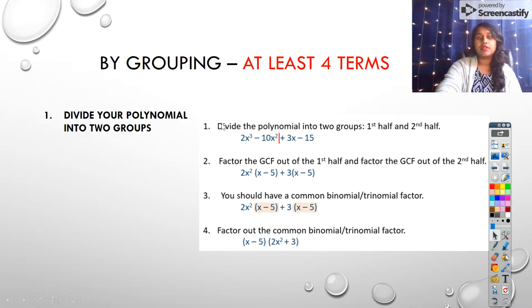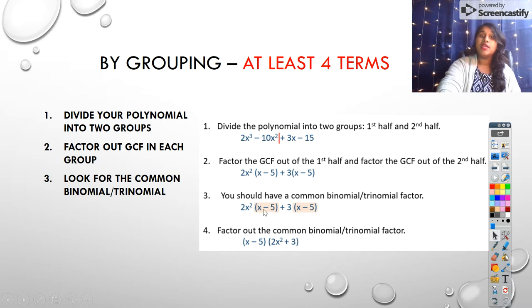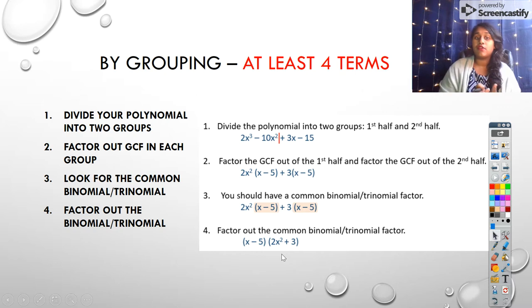Here's our visual representation of what's happening. And here are steps. We divide into two groups. As you can see, we literally just drew a line between those four terms. Then we factor out our greatest common factor in each of those. 2x² factored out of this first set and 3 factored out of the second set. So what we end up with is another common factor. If I pull out (x - 5), what I'm left with is 2x² + 3. And that's our other factor.